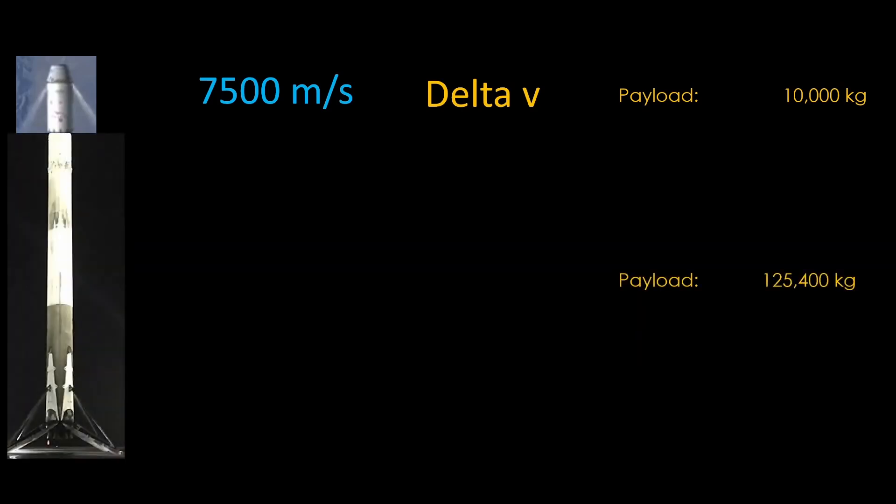Since we can't get more delta V by adding more propellant to our stage, we need a different solution. We take our stage that can generate 7,500 meters per second of delta V, and it becomes a payload for our first stage, all 125,400 kilograms of it. But that first stage only needs to generate about 1,900 meters per second of delta V to get into orbit, and that's fairly easy even with the high payload mass. Easy enough that the first stage has enough delta V left over to land so it can be reused.